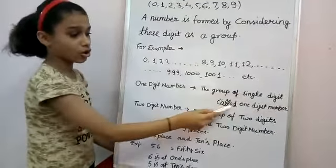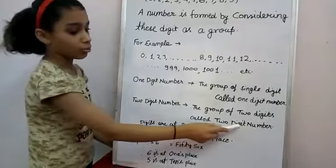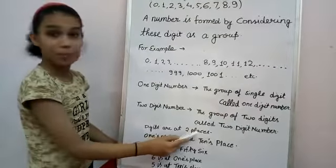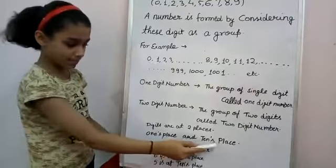Two digit number: the group of two digits called two digit number. These digits are at two places, 1's place and 10's place.